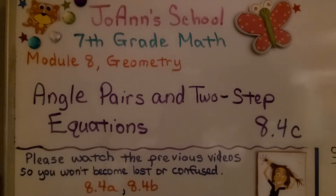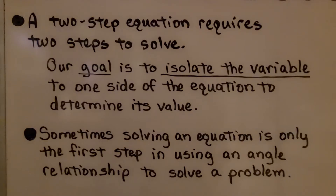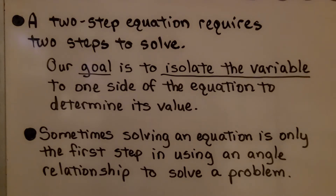Lesson 8.4c, Angle Pairs and Two-Step Equations. A two-step equation requires two steps to solve. Our goal is to isolate the variable to one side of the equation to determine its value. Sometimes solving an equation is only the first step in using an angle relationship to solve a problem.